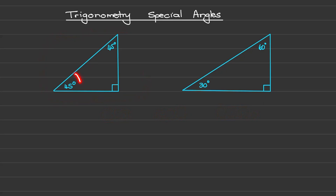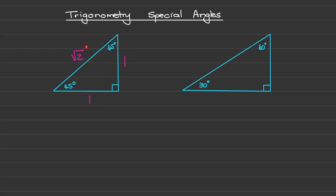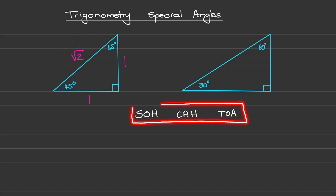Here we have angles of 45 degrees and a right angle of 90 degrees. For this triangle we'll use the lengths of the sides as one unit each, and by using Pythagoras we can find the length of the hypotenuse, which is the square root of two. To help us find the trig ratios we'll use the acronym SOH-CAH-TOA.